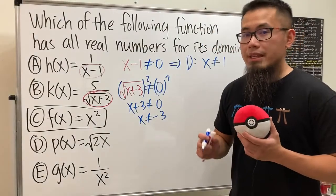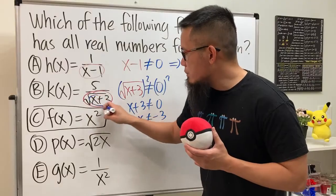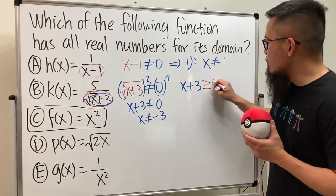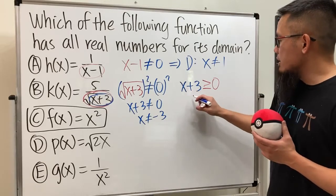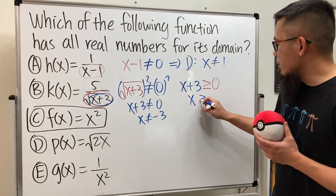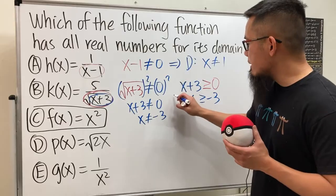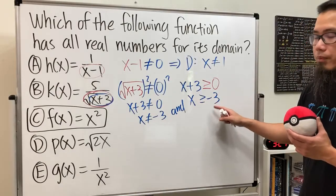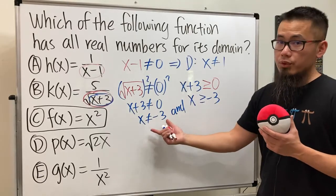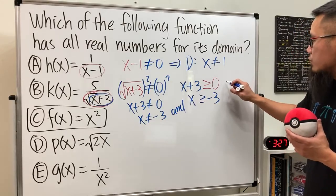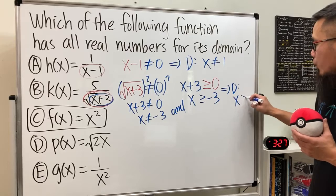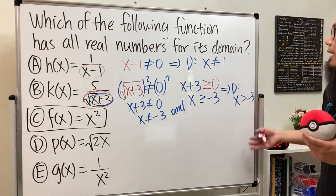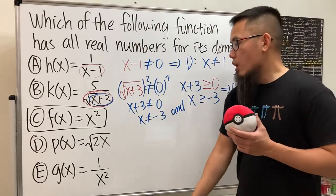The second restriction is that because we have x + 3 inside a square root, we need x + 3 to be greater than or equal to 0. Subtracting 3 from both sides gives x is greater than or equal to negative 3. However, combining both restrictions — x cannot equal negative 3, and x must be greater than or equal to negative 3 — we have to drop the equal sign. So the domain is x greater than negative 3.